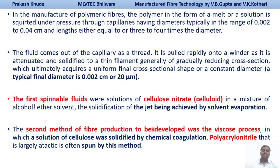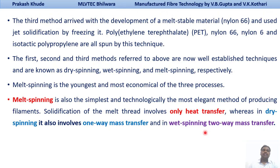The second method for fiber production developed was the viscose process. In this, a solution of cellulose was solidified by chemical coagulation, and polyacrylonitrile — which is largely acrylic — is often spun by this wet spinning technique. The third method arrived with the development of melt spinning, starting with Nylon 66, solidified by cooling. Nylon 66 was the first polymer developed by melt spinning, and the technique can also be used for polyester, Nylon 6, Nylon 66, and isotactic polypropylene.